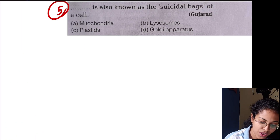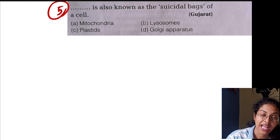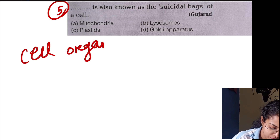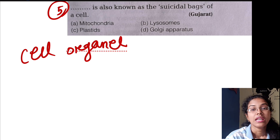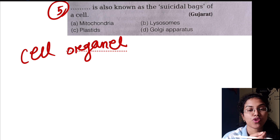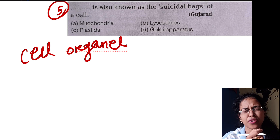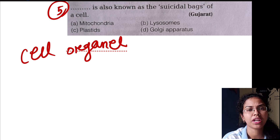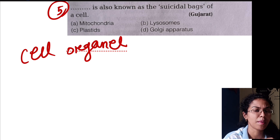Question 5: this organelle is also known as the suicidal bag of a cell. If you learn the cell organelles — ribosome, lysosome, mitochondria, nucleus, plasma membrane, cell membrane — these are all organelles. The answer is lysosome.